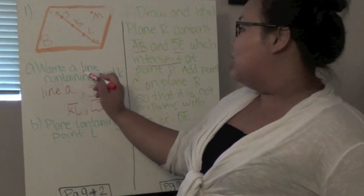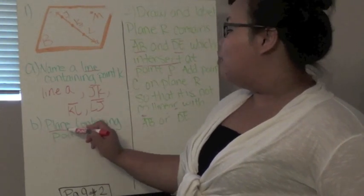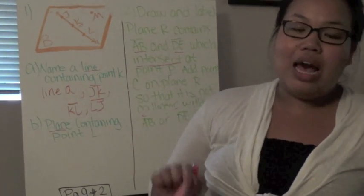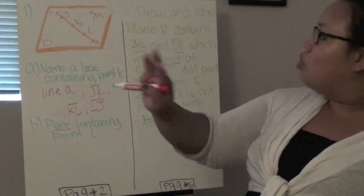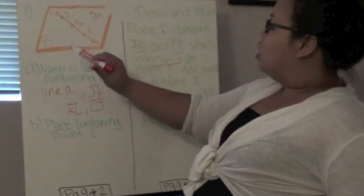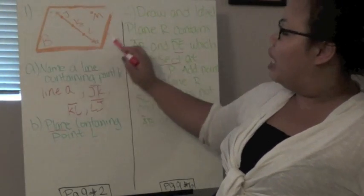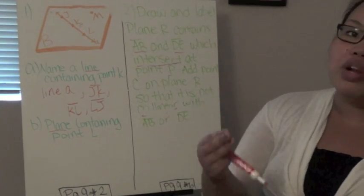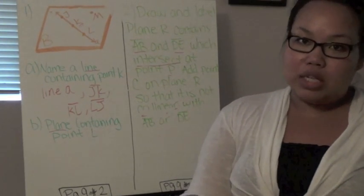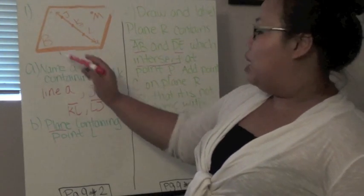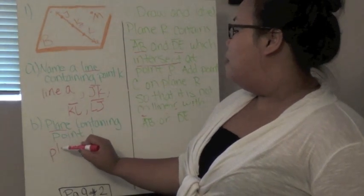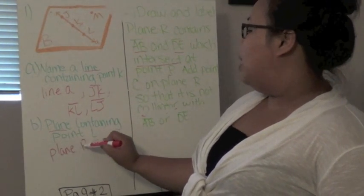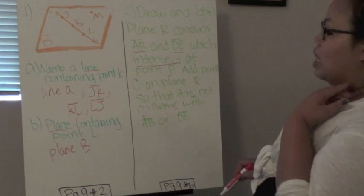Now a plane, this one's asking for a line. This one is asking for a plane. So how many points do I need? I need three points, any three points on this plane containing L. So this is the whole plane contains L. I can name any three points, or I can name an uppercase script, uppercase cursive, which in this case is B. So I can say plane B.